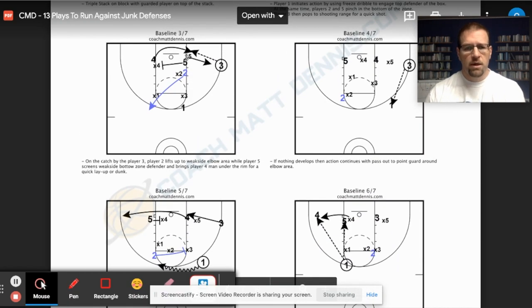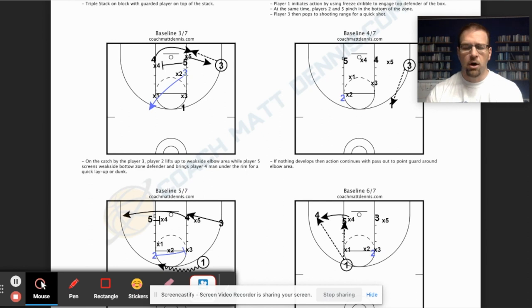X3 is here and X5 leaves. That gives us two options. One is if five is a great post player, we're going to just dump it down into them because they're really going to be unguarded.